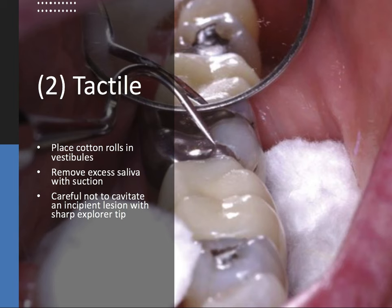The next arm of the clinical exam is tactile. Again, we want everything dry. You can place cotton rolls in the buccal and lingual vestibules and remove excess saliva with suction, doing this in tandem with the visual exam — lightly air drying each tooth as you go. Classically, you would feel a stick with the explorer where a little bit of softness is indicative of caries.